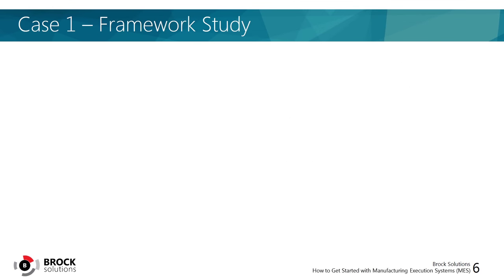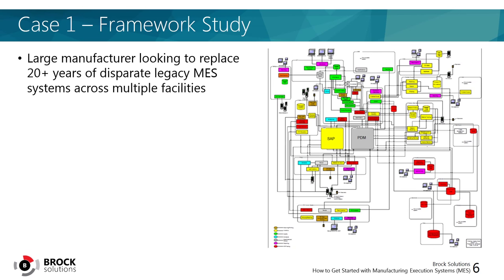The first case study is for a framework study. This was a large manufacturer looking to replace over 20 years of disparate, obsolete MES systems spanning multiple facilities. Many of these systems had been extended well past their intended life cycle, had become unsupportable, and were thought of as ticking time bombs. They had a centralized ERP system, which was SAP, and were at the beginning of a product definition management, or PDM, system implementation. The rest of their real-time applications across various facilities were confusing, with a large number of obsolete legacy systems — many not tied together, and many performing the same functions. As just one example, their inventory was managed in 15 different systems.